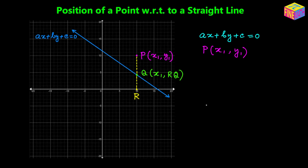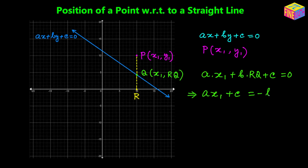Q is a point on this straight line, so Q's coordinates must satisfy the equation of the straight line. Any point on a straight line must satisfy the equation of that line. So, substituting Q's coordinates into the equation: a times x₁ plus b times RQ plus c equals zero. From here, we can say a times x₁ plus c equals negative b times RQ.